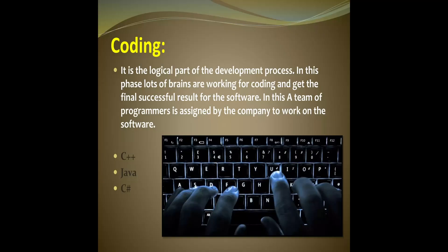Coding is the logical part of the development process. In this phase, a lot of brains are working to achieve the final successful result for the software. A team of programmers is assigned by the company to work on the software. Coding examples include C++, Java, and C# which can be used to create the software.